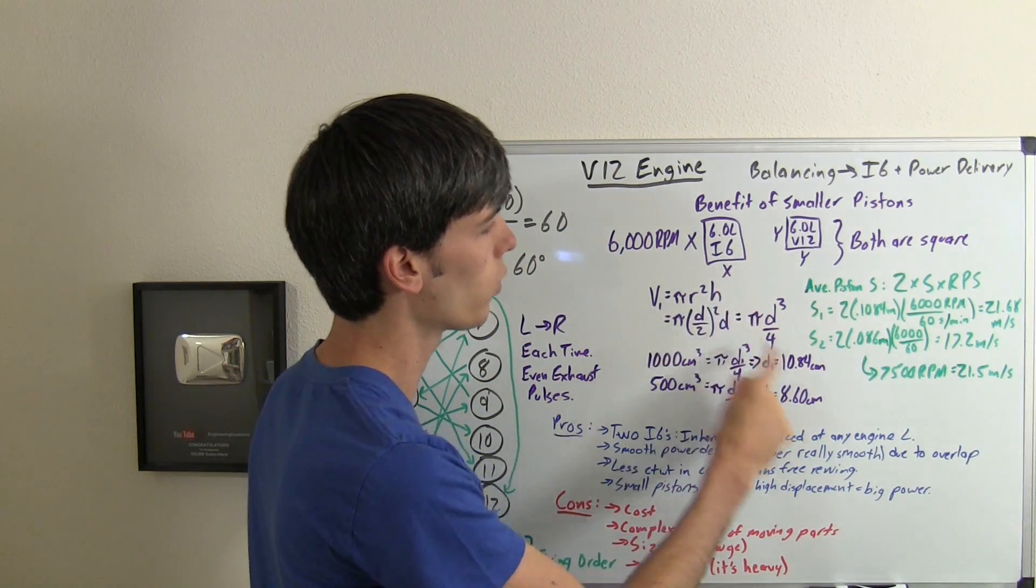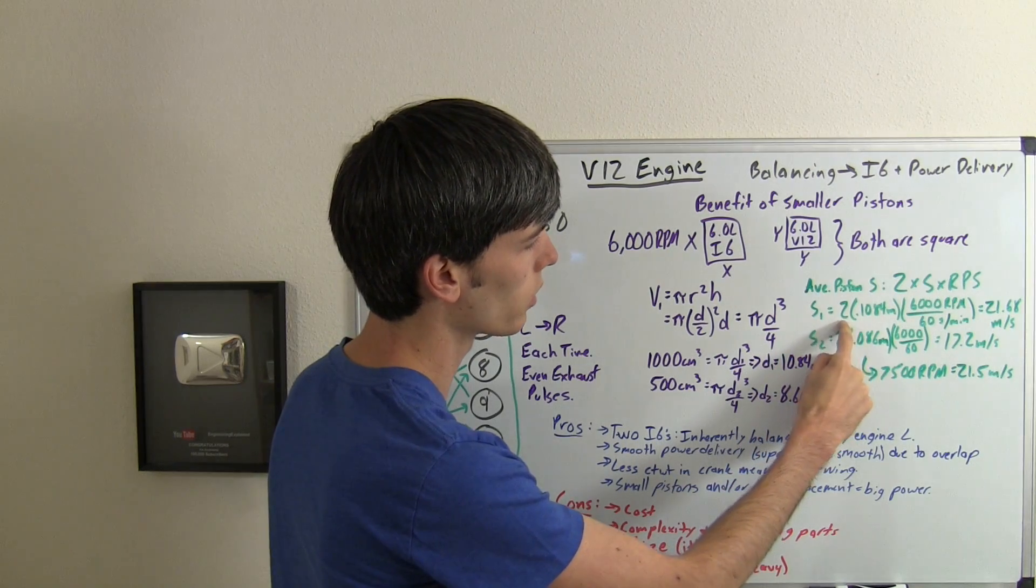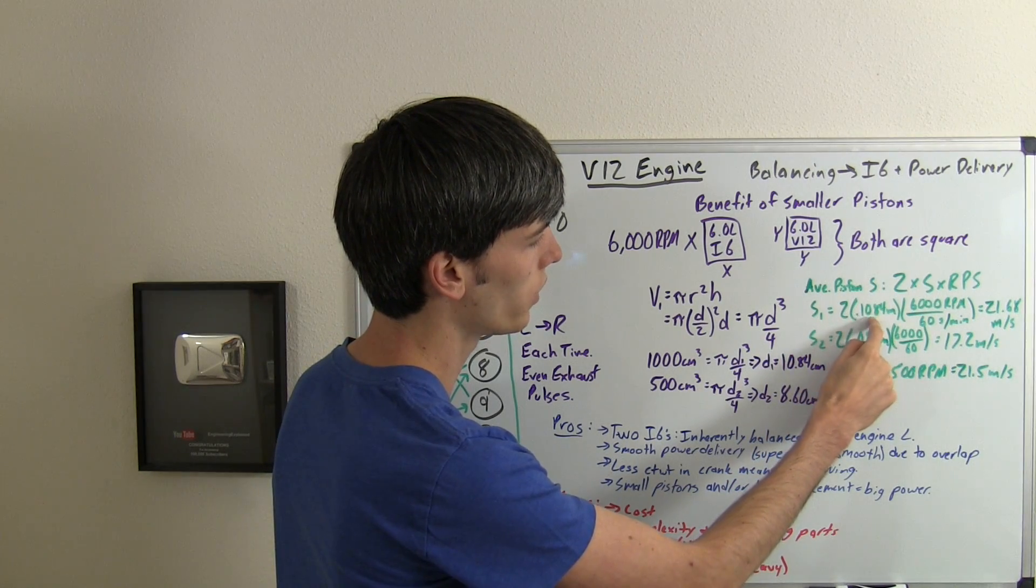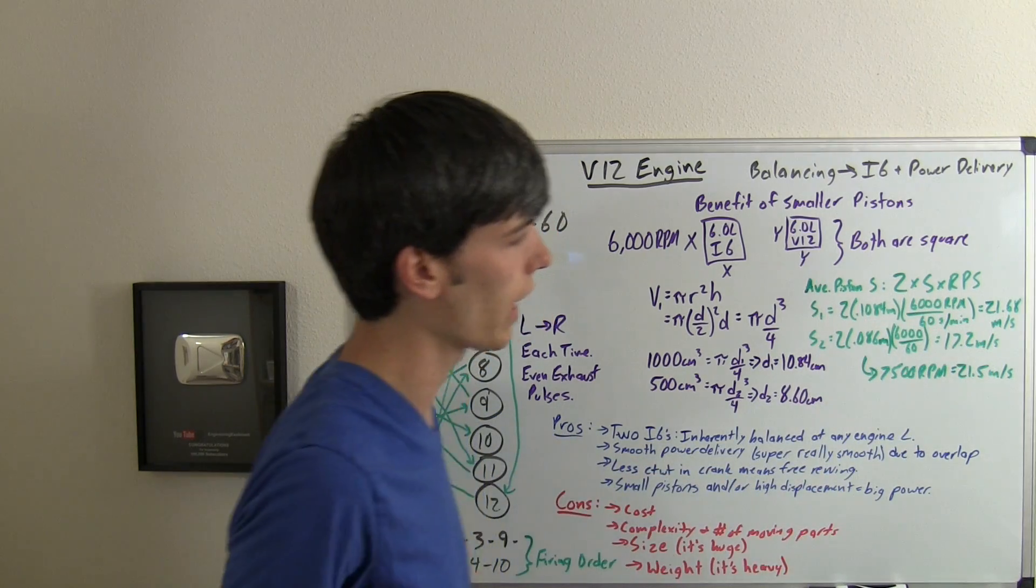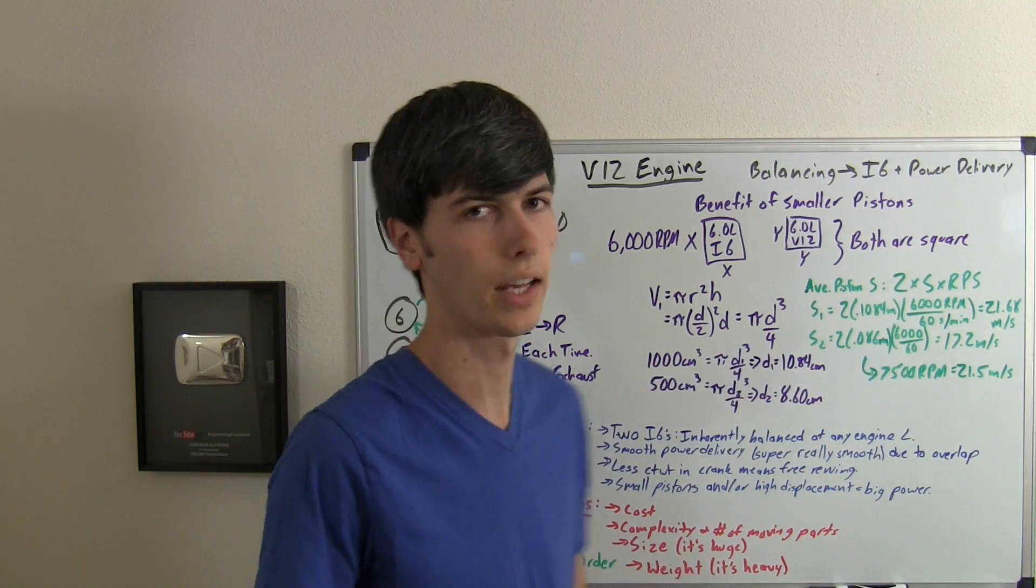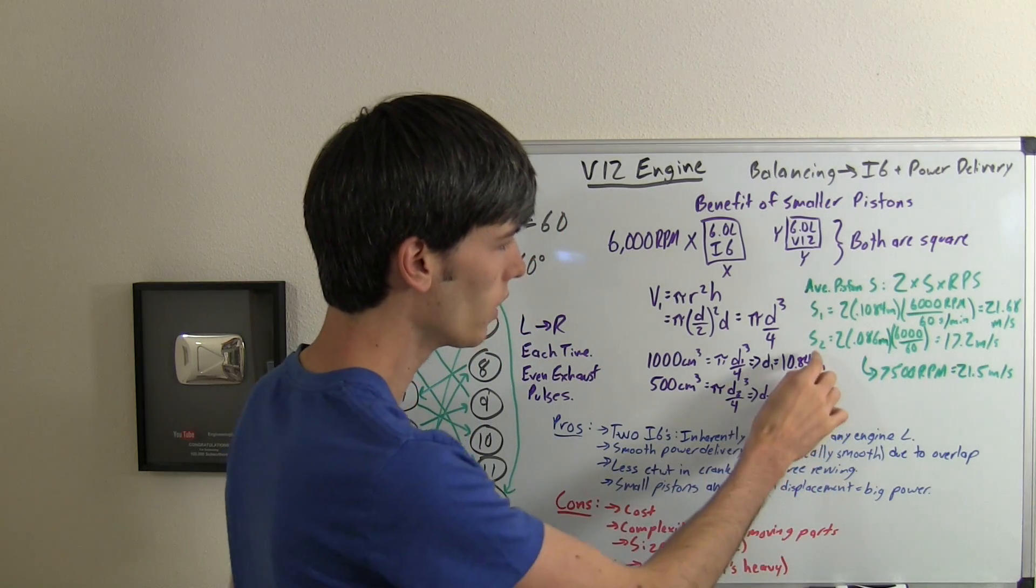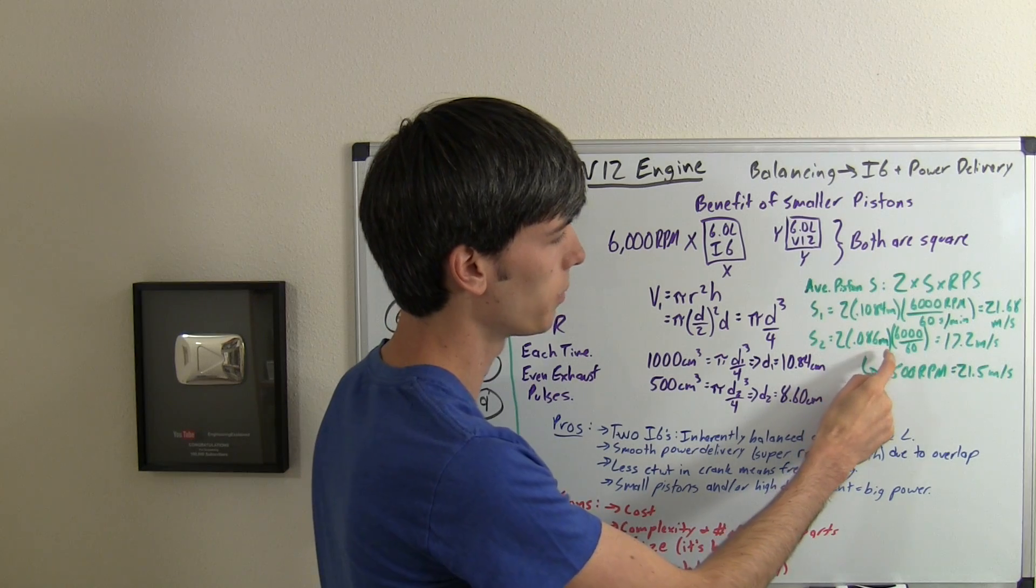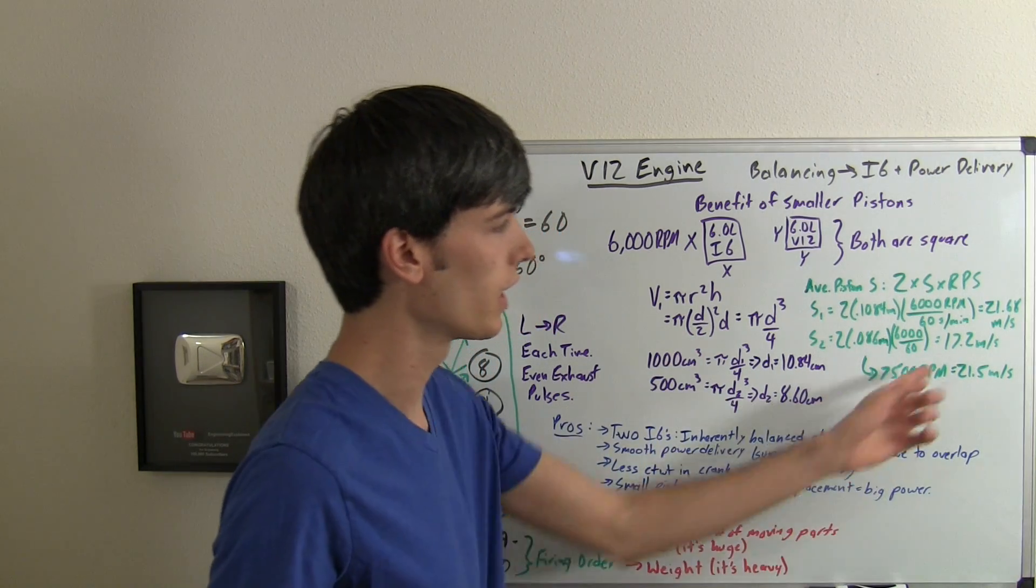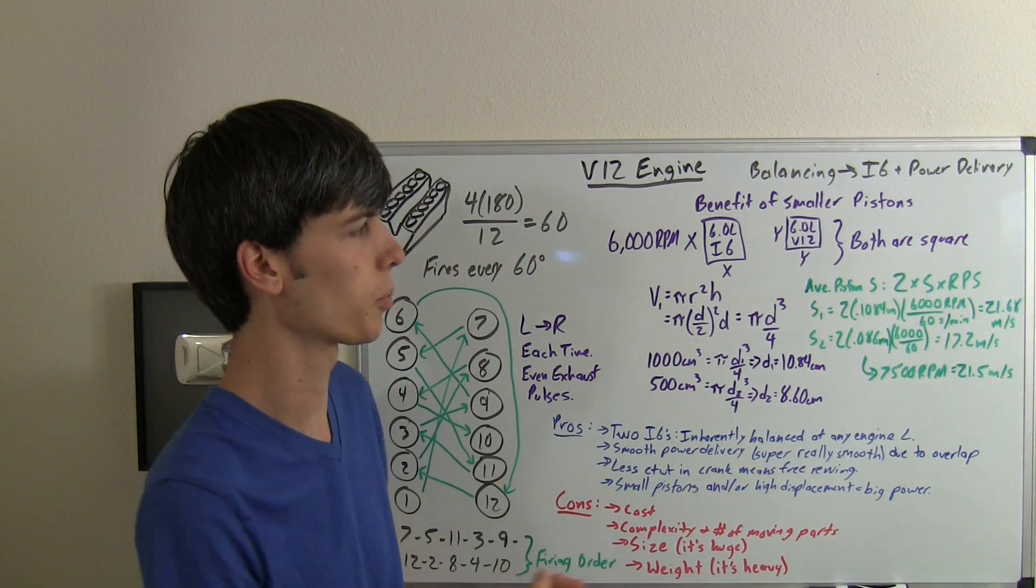So for our engine 1, the average piston speed will equal 2 times 0.1084 meters times 6,000 divided by 60. That gives us an average piston speed of 21.68 meters per second. For our engine number 2, 2 times 0.086 meters times 6,000 divided by 60 equals 17.2 meters per second.